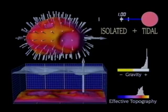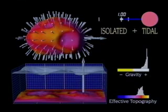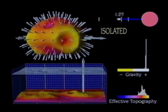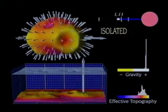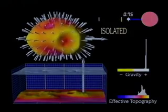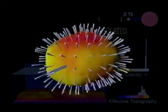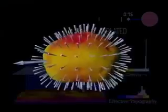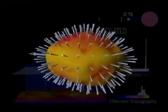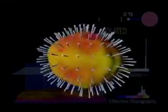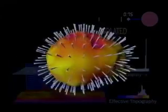To illustrate how the forces add, we will first look at Phobos in isolation, ignoring tidal forces. Since Mars is ignored, the effective topography is unchanging as Phobos approaches Mars. The effective topography color map is equivalent to the real topography, indicating that an object on the surface would move towards the bottom of the crater.